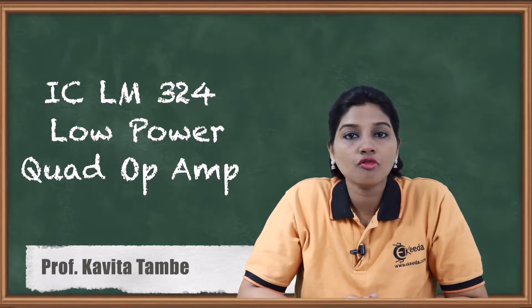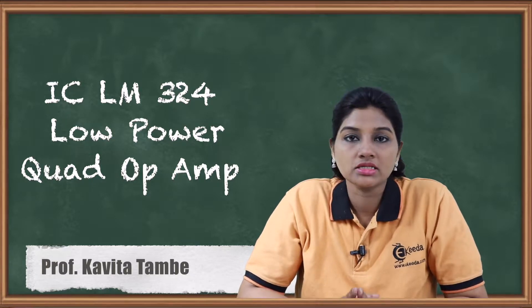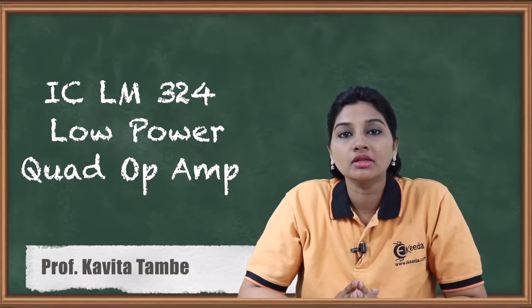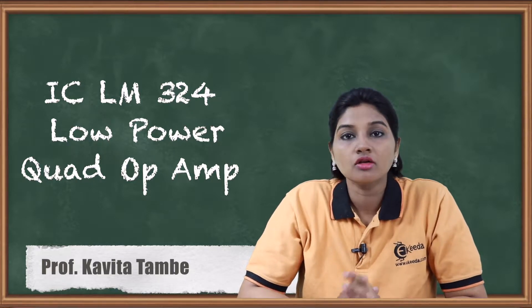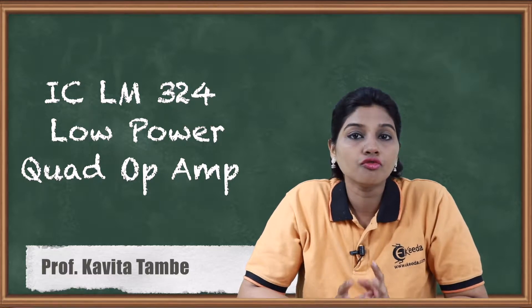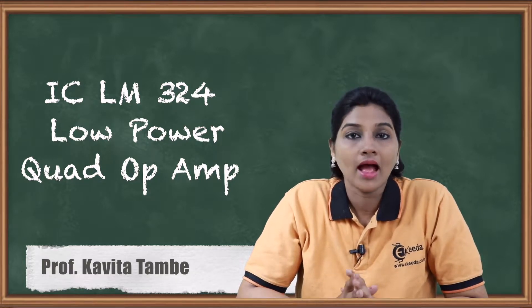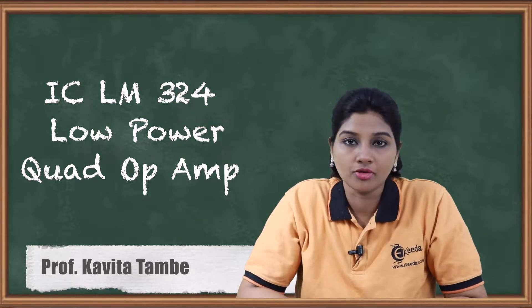Now, we know that in case of operational amplifier, the operational amplifier is available in the form of IC that is IC741C, but in that case only one operational amplifier is available. So here we are going to study IC LM324 in which four independent operational amplifiers are available. And that's why the IC is named as Low Power Quad Operational Amplifier.